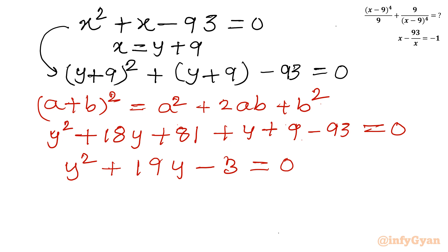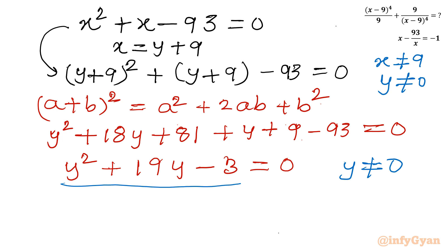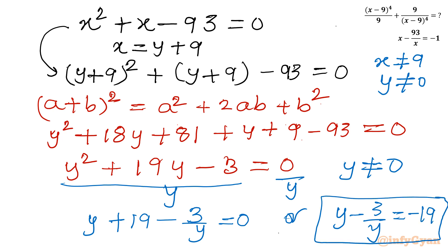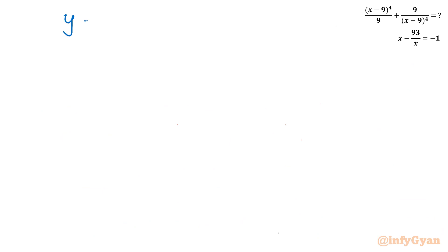Now, as per the condition x cannot equal 9, that means y cannot equal 0. Because y cannot equal 0, I can divide both sides by y. This equation comes out in the form of a reciprocal equation: y plus 19 minus 3 over y equals 0, or y minus 3 over y equals negative 19. This is our reciprocal equation: y minus 3 over y equals negative 19.